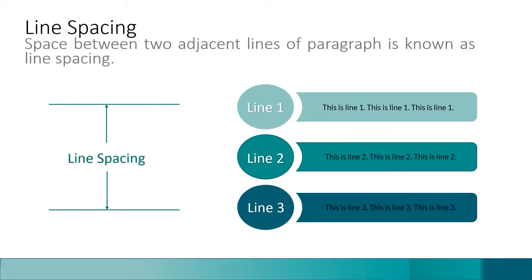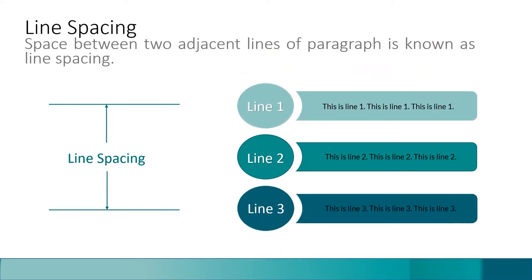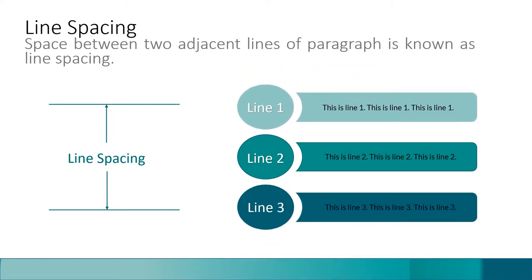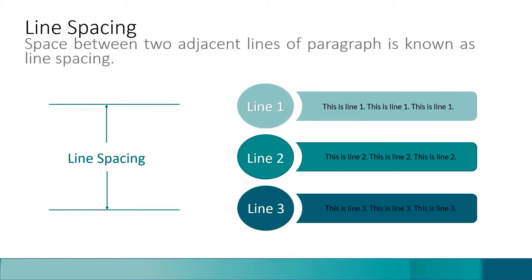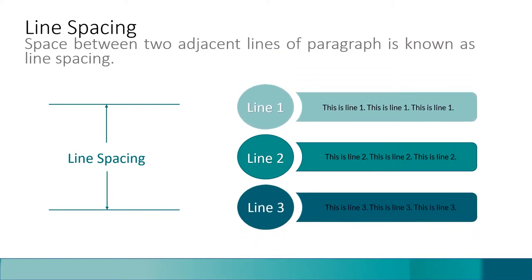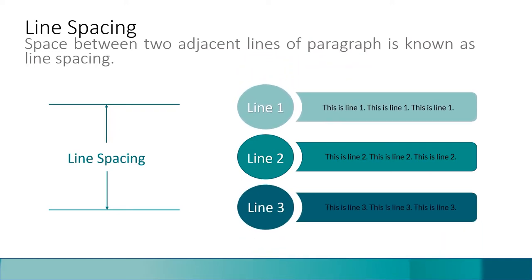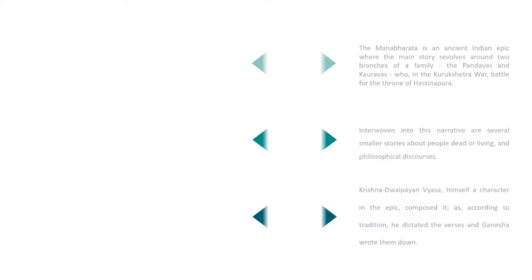Our first topic is line spacing. What is line spacing? The space between two adjacent lines of a paragraph is known as line spacing. On the right-hand side we have three lines of text: line one, line two, and line three. Look at the space between line one and line two, and also between line two and line three. The space between those lines is changing, which means the line spacing is changing in that paragraph.